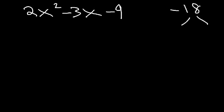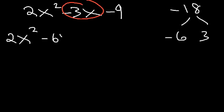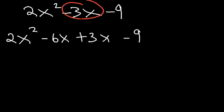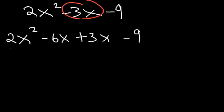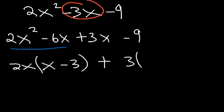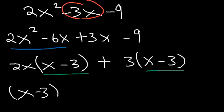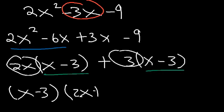Those numbers are negative 6 and 3: negative 6 times 3 is negative 18, and negative 6 plus 3 is negative 3. So we replace negative 3x with negative 6x plus 3x. Check the ratios: negative 6 divided by 2 is negative 3, and negative 9 divided by 3 is negative 3 — they match. Taking out GCF 2x from the first pair gives x minus 3, and taking out 3 from the last pair gives x minus 3. Factoring out x minus 3 leaves 2x plus 3. The answer is x minus 3 times 2x plus 3.